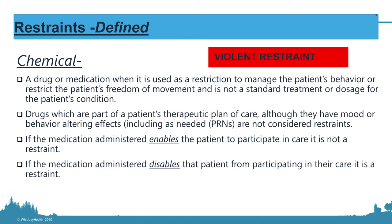Chemical restraints get tricky because some medications under some circumstances are used as a chemical restraint and under others they are not. For example, if you give lorazepam to calm anxiety, that's not a restraint. But if you give lorazepam to stop a patient from kicking people or to keep them in the room, that is a restraint. The same applies to ketamine or Zyprexa — it depends on the purpose of the administration, not the drug itself.